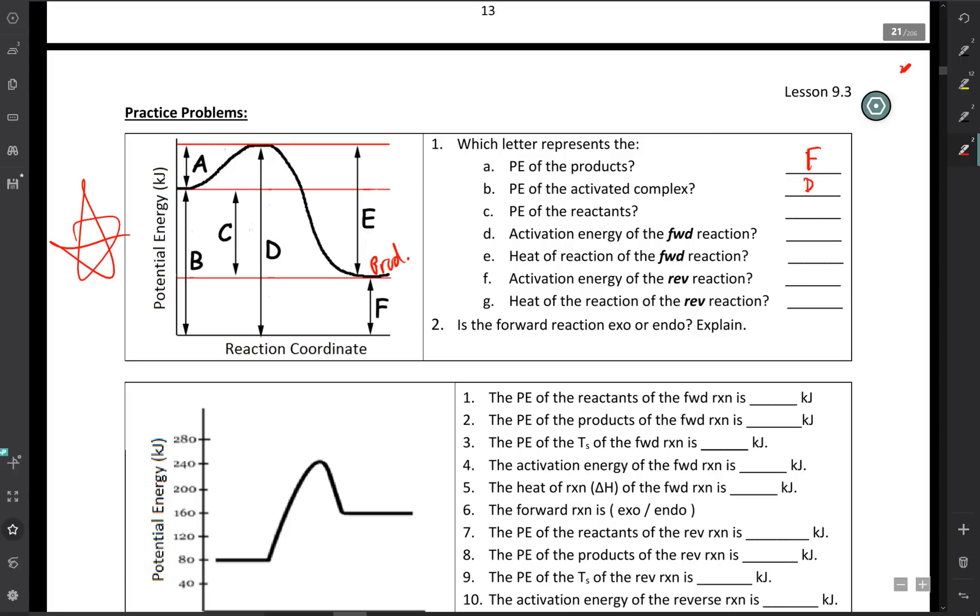The potential energy of the reactants. Reactants are right over here. I'm not sure how well you can read that. Sorry, it's kind of sloppy. So the potential energy of the reactants is going to be B.